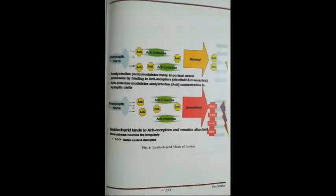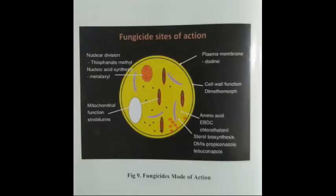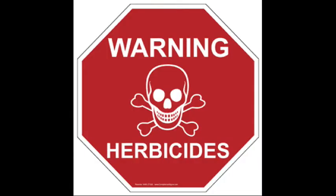It covers mode of actions and doses to be used on different pests along with waiting periods. Similarly for fungicides, which disease to be targeted and how to control it. Next, herbicides — their detailed mode of action used in different crops along with the doses.